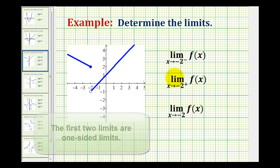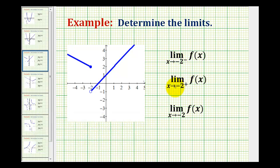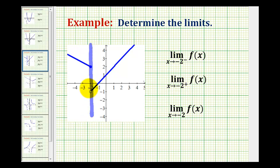Notice for both of these we are approaching negative 2. So let's go ahead and draw a vertical line at x equals negative 2 so we can see exactly where we're approaching. Here's x equals negative 2, and then for this first limit we're approaching negative 2 from the negative side, which will be from this direction here.